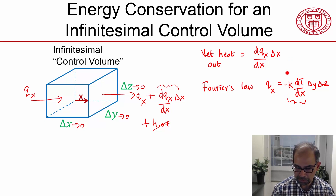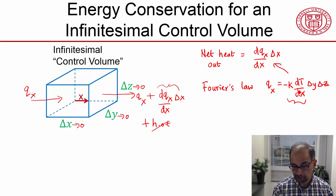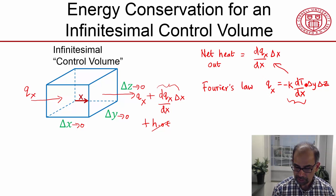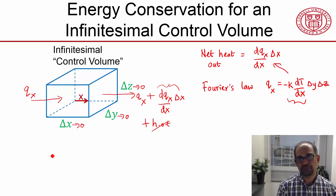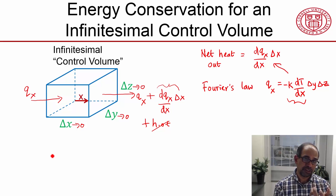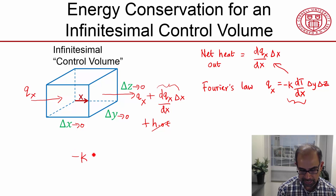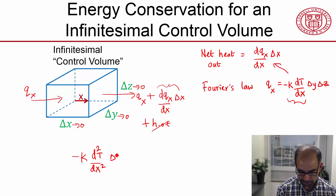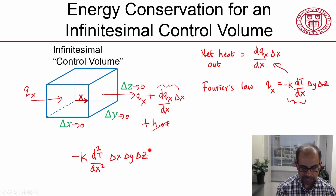If I substitute that back in, I get the net heat flow out in terms of the temperature. When I substitute it back I have to differentiate, so I get a second derivative of the temperature. The purpose is not to derive this rigorously, but intuitively so you get a sense of the physical significance of each term. The result is a term that looks like minus k times d²T/dx², multiplied by delta x delta y delta z — this represents the net heat flow through the faces.